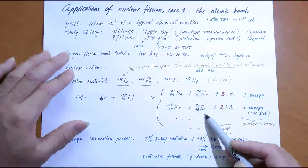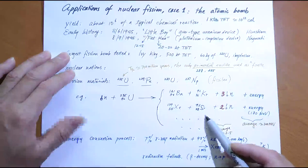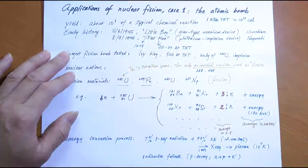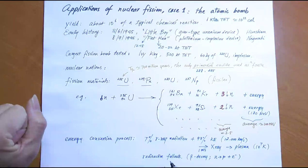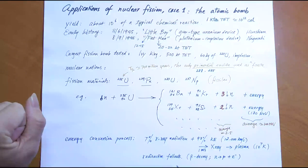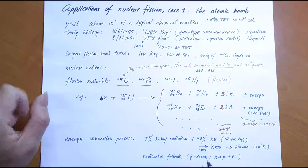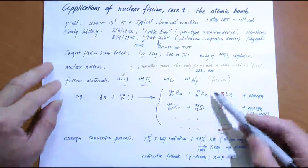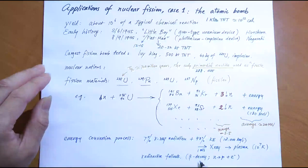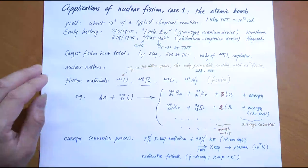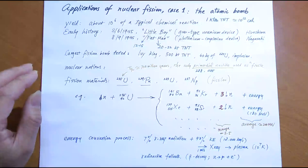Some of the fission products are long-lived radioactive elements, staying radioactive for decades or even longer. That is a very bad aspect of the atomic bomb: the explosion itself is only the beginning of the problem. You have to deal with long-term nuclear radioactive fallout, primarily through beta decay, because these products have too many neutrons and convert them to protons via beta decay.